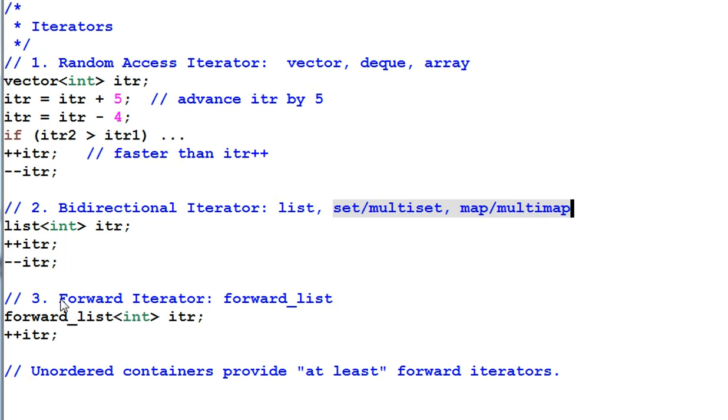Third one is forward iterator. Forward iterator can only be incremented. It cannot be decremented. And forward list provides only forward iterator. So what containers have we left? The unordered containers. Unordered containers provide at least forward iterators, but they have the option to provide a bidirectional iterator. It depends on the implementation of the STL.